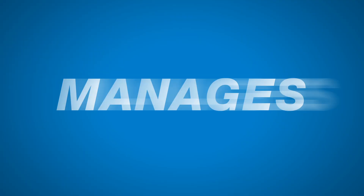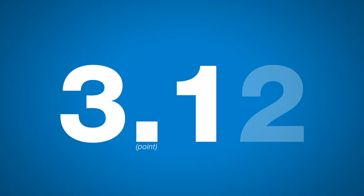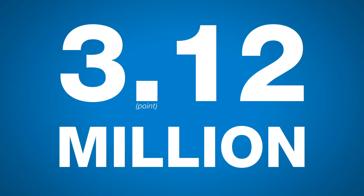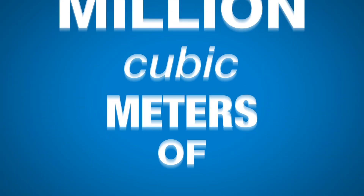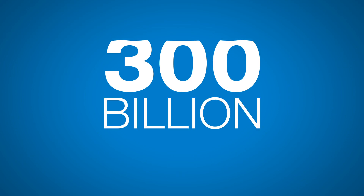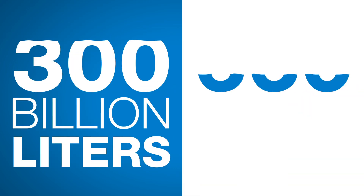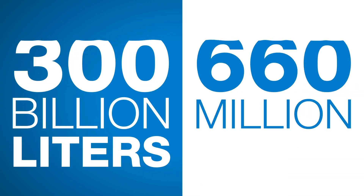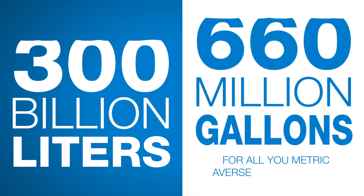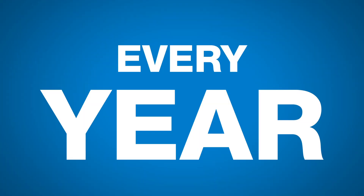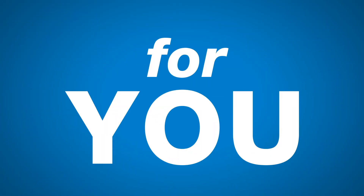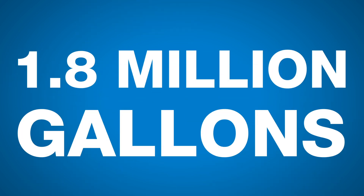The amazing part is that with the Andritz dewatering system, the mine in Mongolia manages to save about 3.12 million cubic meters of water a year. That's over 300 billion liters — or 660 million gallons for all you metric-averse ones out there — of water every year.